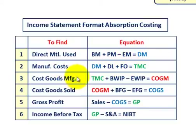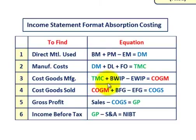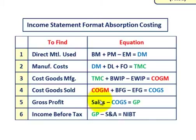Third, we determine cost of goods manufactured: take total manufacturing costs, add beginning work in process, and subtract ending work in process — that gives cost of goods manufactured. Fourth, we determine cost of goods sold: take cost of goods manufactured, add beginning finished goods, and subtract ending finished goods — that gives cost of goods sold. Fifth, we determine gross profit: take sales dollars for the period and subtract cost of goods sold to get gross profit.